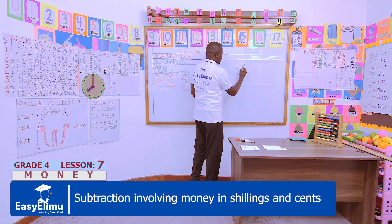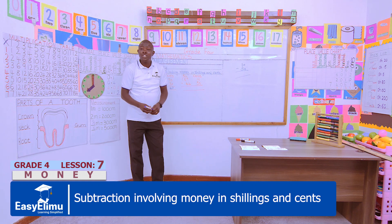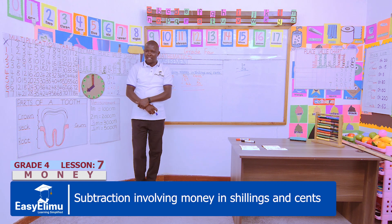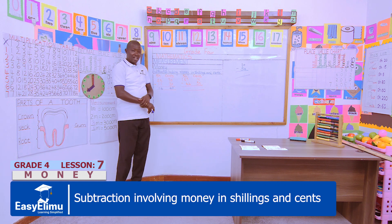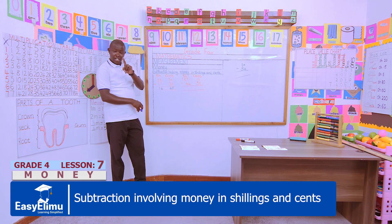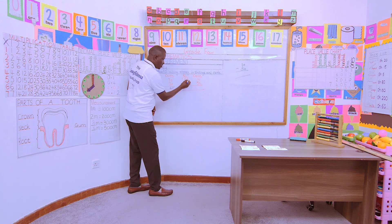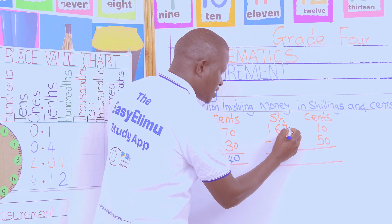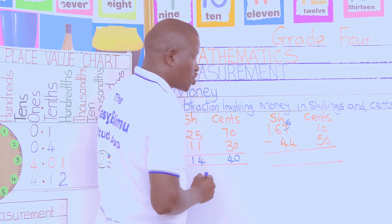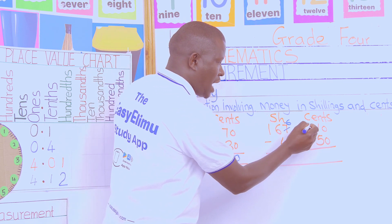Learners, is 10 cents take away 50 cents possible? No, it is not possible. So what shall we do? Jen — we borrow one shilling from 167. We borrow one shilling from 167 and regroup it. So we borrow one shilling from 167 and we remain with 166. We have cancelled the seven and it becomes six.